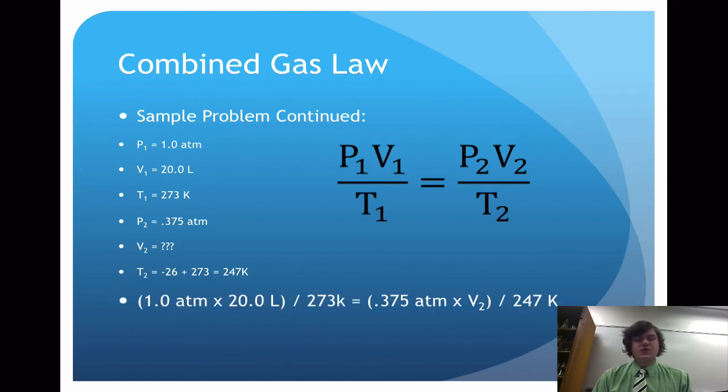So we will take 1.0 times 20 and put that over 273 to complete the left side of the equation. Then on the top half of the subscripts 2, we have 0.375 atmospheres times V2. V2 is the value that we're trying to calculate and set that over 247 Kelvin. When we solve for V2, we see that the answer is 48 liters.